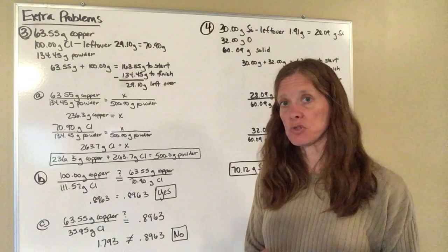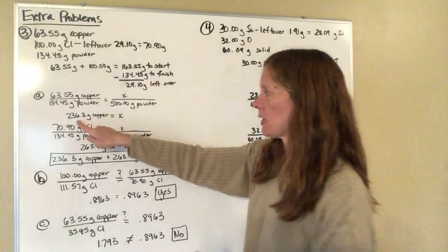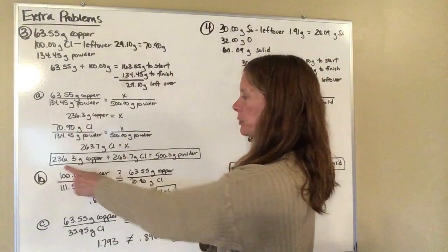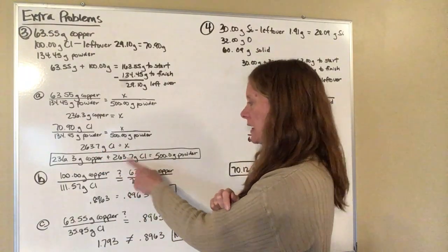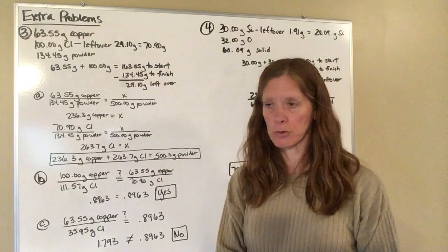You want to check make sure that that adds up to what it's supposed to. So if you have 236.3 grams of copper you add to that the 263.7 grams of chlorine and you do come up with 500 grams of the powder.